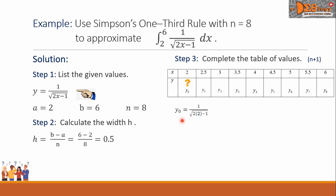So y sub 0 equals 1 all over the square root of 2 times 2 minus 1. Simplifying this, we have 0.5773.